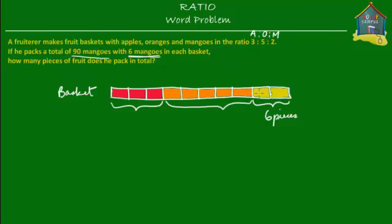What we see is that there are two sets of mangoes, and two sets together make six pieces. So then how much is one set equal to? Well, if two sets are equal to six pieces, then one set is obviously equal to three pieces. So one set is equal to three pieces. Then what can you tell about the number of apples and the number of oranges in the basket? Each set of apples is also equal to three pieces, and each set of oranges is also equal to three pieces.